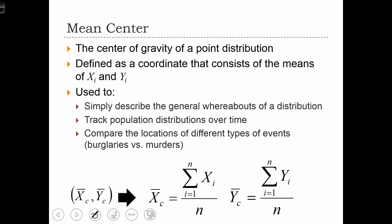The first measure of central tendency that we're going to investigate is the mean center, which is analogous to the center of gravity of a point distribution. Let's define the coordinates of points in the normal way using an x variable and a y variable.